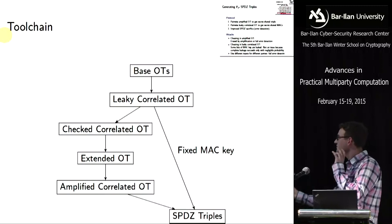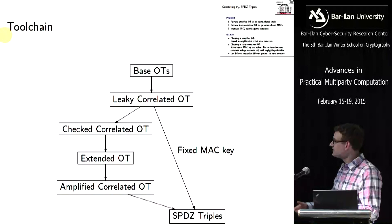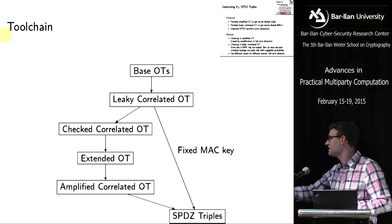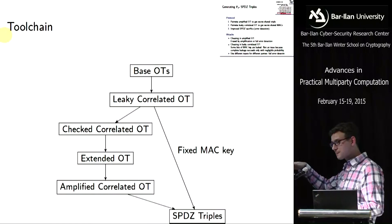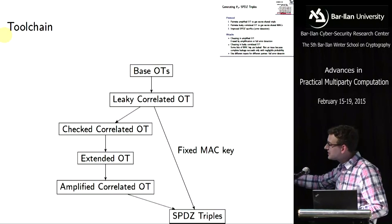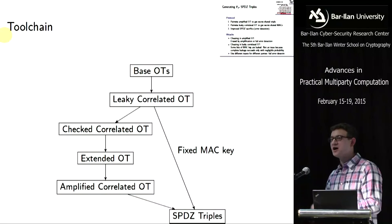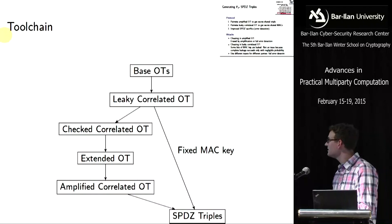To conclude, here is an overview of what you could call a tool chain. You start with base OTs, introduce the correlation to get leaky correlated OT, then check and use hash functions to get extended OT. From extended OT you introduce the correlation again to get SPDZ triples — the left path gets the triples and the right path gets the MACs and the shares of the MACs. We can take a shortcut because we use the MAC key shares in the base OTs and the MAC key shares are the same throughout the computation, so we don't need a completely extended OT to get there. Thank you.